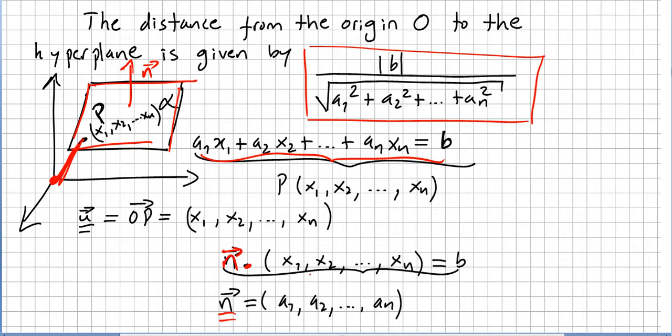Where this x1, x2, xn is like a vector from the origin, because points are considered as vectors from the origin. So n inner product with x1, x2, xn is equal to B. This is exactly the same notation.